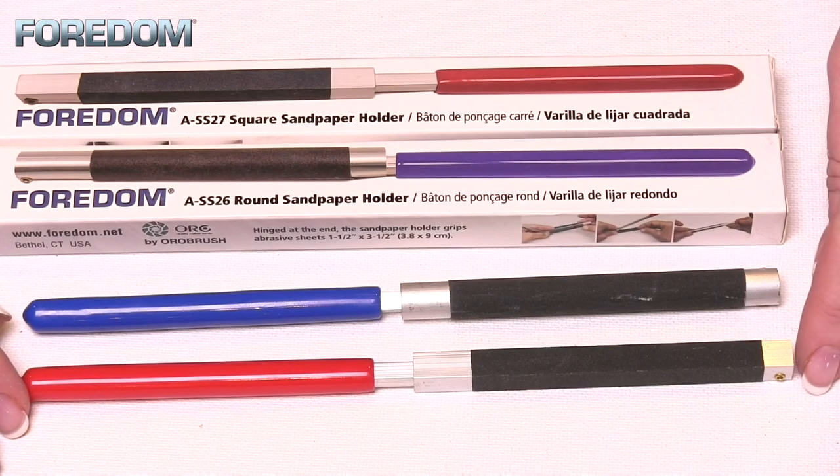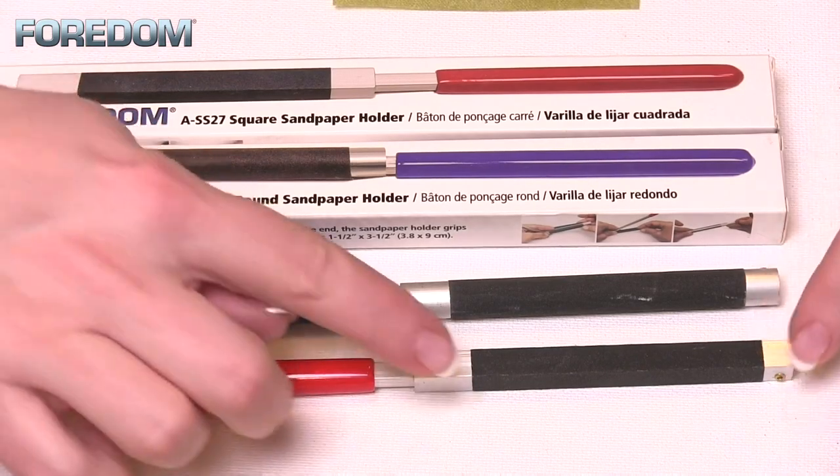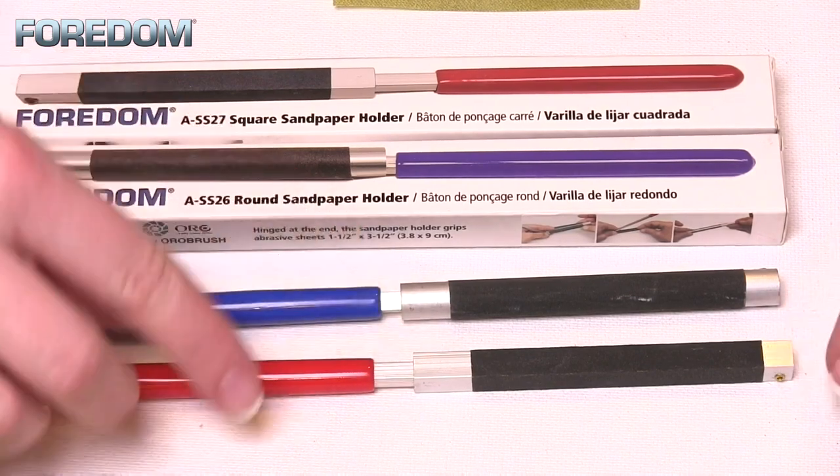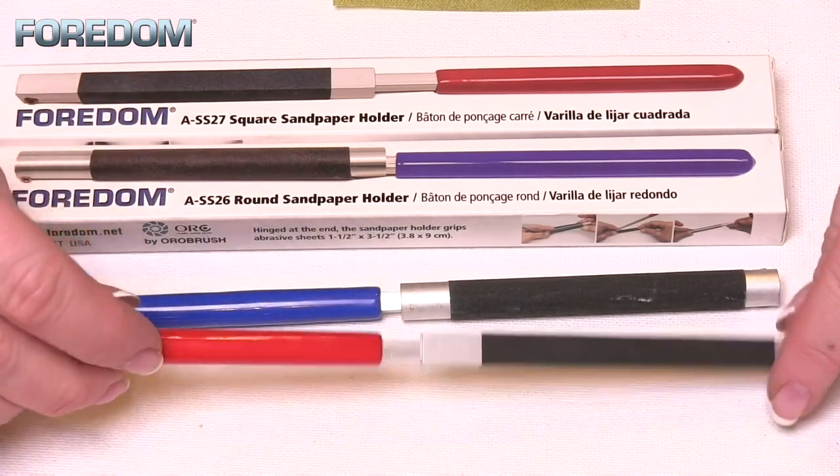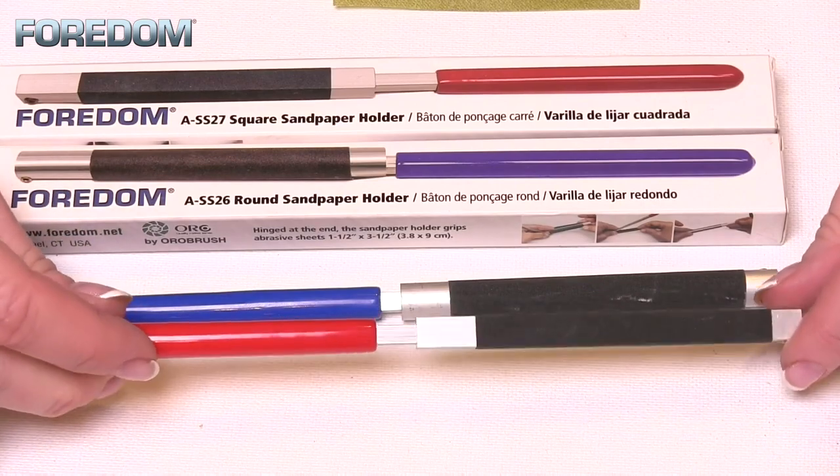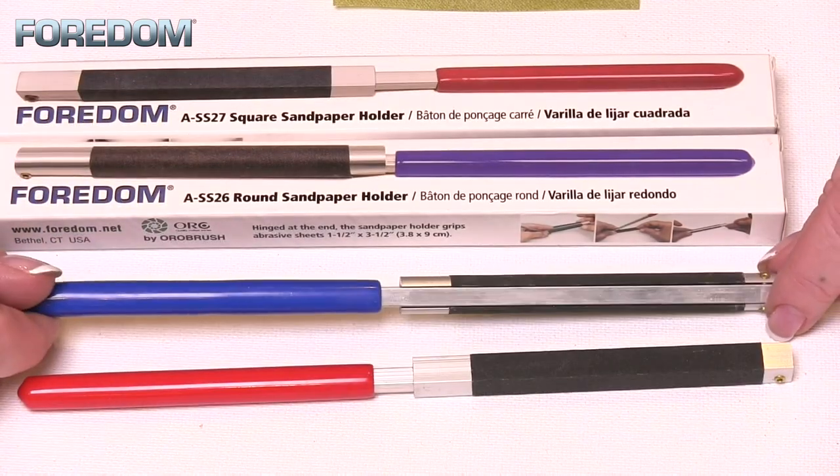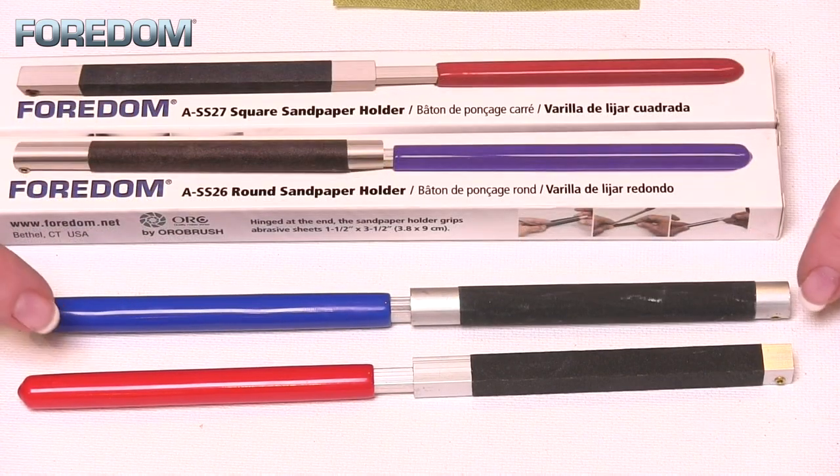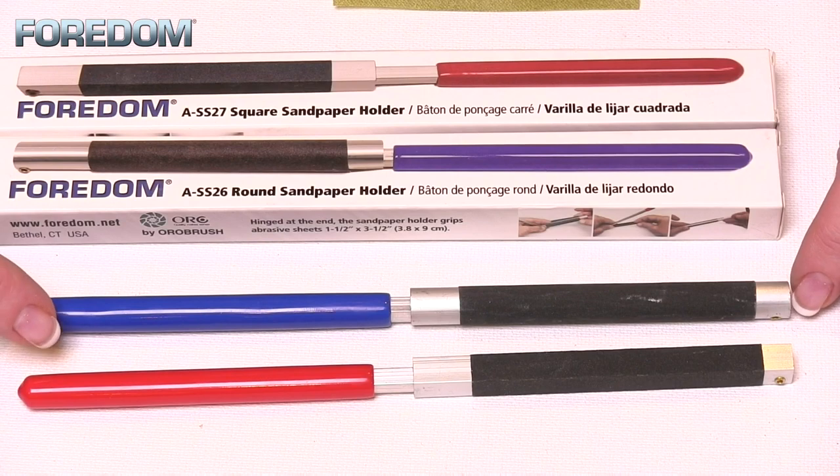It's very easy to change between your grits. Both of these sanding sticks are eight inches long and can each take up to three and a half inch wide pieces. The square gives you three surfaces to sand, and we also have a round option in the same configuration. The colored handles allow for easy identification.